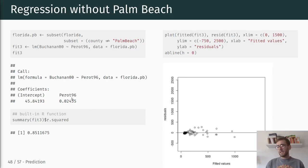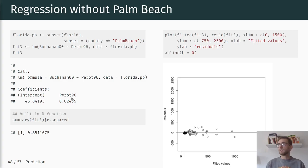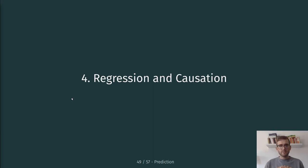Looking at the residual plot again without the outlier, the fit is much better and we no longer see that individual outlier for Palm Beach. That was a brief introduction to OLS and the linear regression framework. In the next video I'm going to talk about regression and causation.